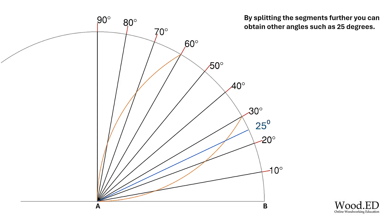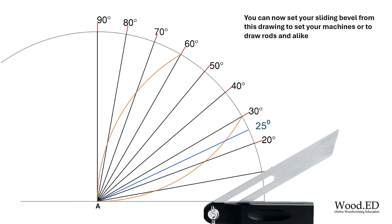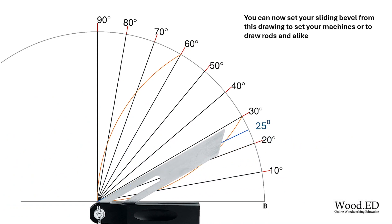I know we've said that we haven't got a protractor but while you're practicing this would be the point where you could lie a protractor on your drawing and actually find out how accurate you were. And when you've got this drawn up, which won't take any more than five minutes, you can use your sliding bevel and you can start setting angles on your sliding bevel which would help you set your machines or draw rods or alike.